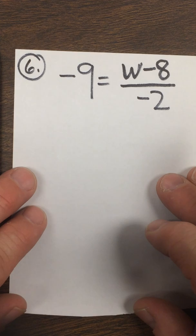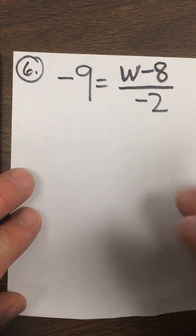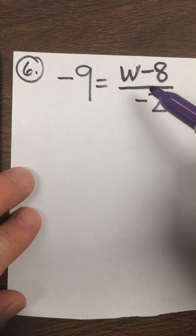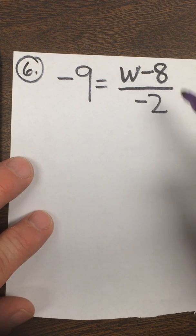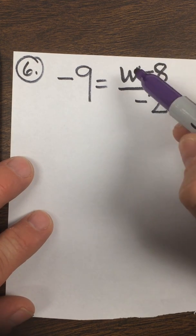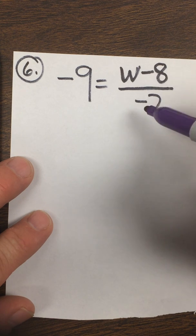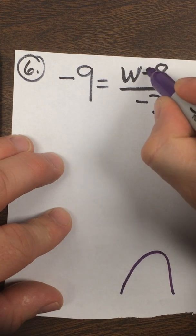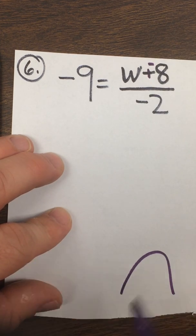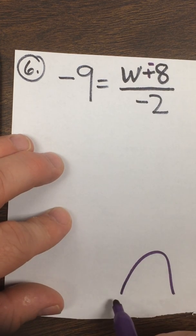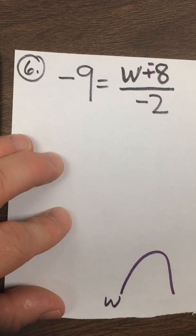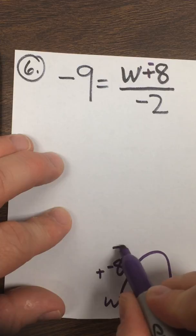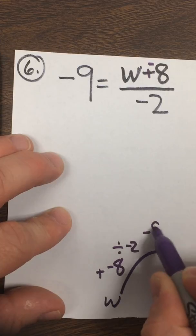Number 6 says negative 9 equals w minus 8 over negative 2. Now this is a fraction bar — it's a grouping symbol. It changes the order of operations a little bit because they would try to get this answer before they divide it by negative 2. I'm still going to do leave change opposite. I would start with the variable — there was a w. They added negative 8, then they divided by negative 2, which got them an answer of negative 9.